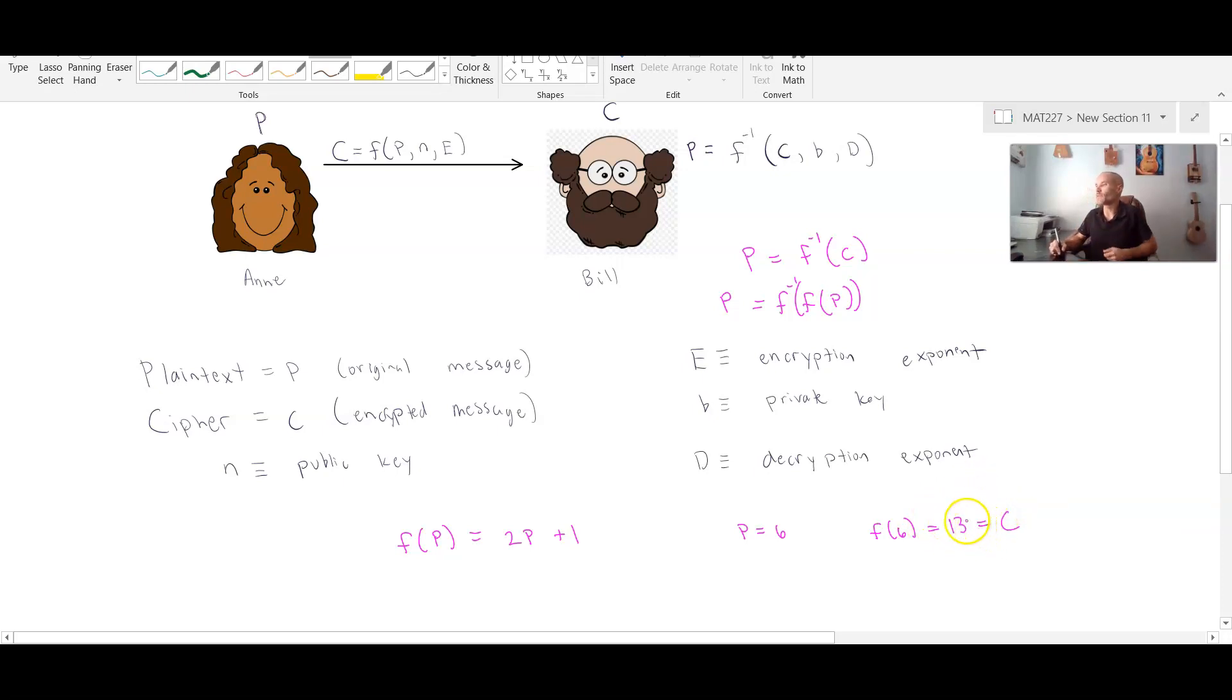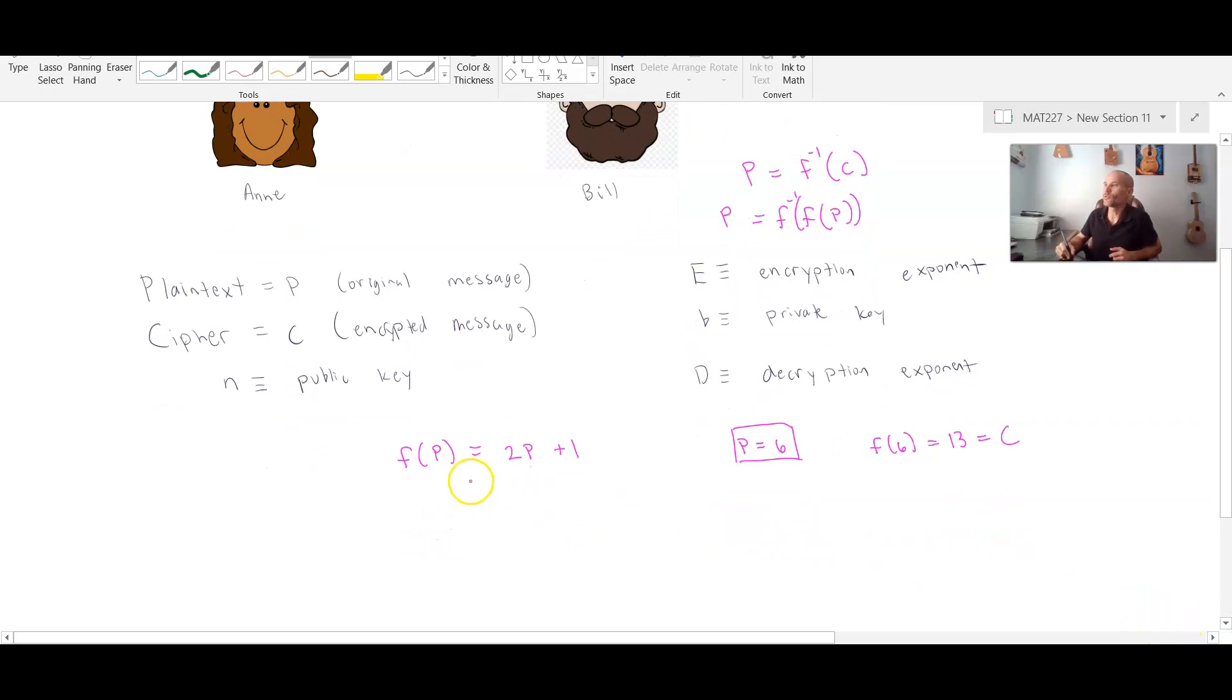Now if you received 13, and you wanted to obtain the original value of p, how would we go about doing that? Well, we would have to have an inverse function. So an inverse function, and once again, I'll just replace this right here, because that's the same thing as saying c is equal to 2p plus 1. So all I would really have to do is solve this equation for p. So I would subtract 1, divide by 2, and that would give me the value of p.